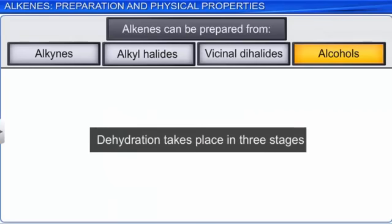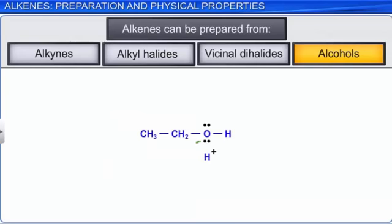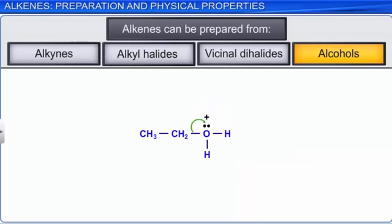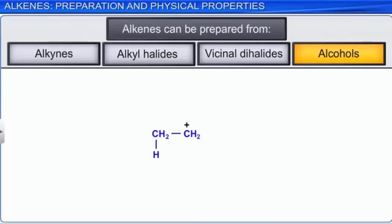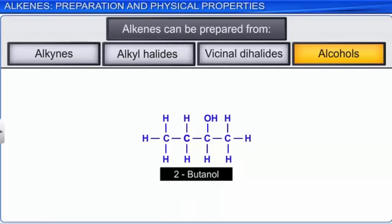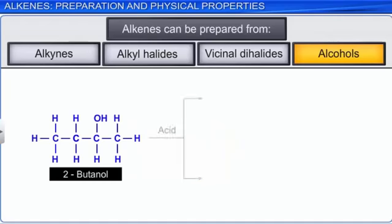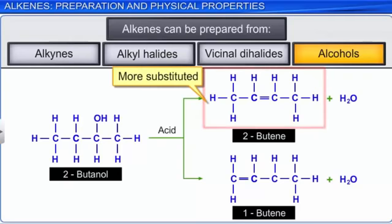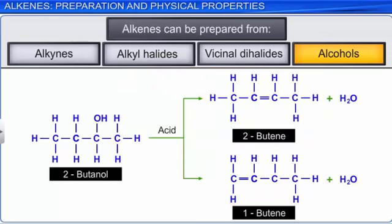Dehydration takes place in three stages. First, the alcohol is protonated by the acid catalyst to form a protonated alcohol. Secondly, the protonated alcohol loses a water molecule to give a carbocation. Finally, the carbocation loses a hydrogen ion and forms a double bond. Saytzeff's rule also governs the dehydration of alcohols. For example, in the dehydration of 2-butanol, there are two possible positions for the double bond. However, 2-butene is more substituted than 1-butene. Hence, the more predominant product is 2-butene.